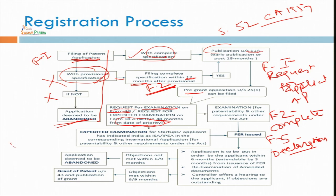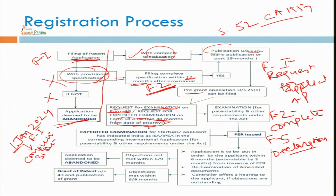For example, you have filed on 1st January 2024. You have to file the complete specification within 12 months, that is by 31st December 2024. After that, you can file a request for examination within 4 years — that is by 31st December 2028. Examination will be there for patentability and other requirements: the examiner will see section 3, section 4, and whether the essentials of patent — novelty, utility, inventive step — have been fulfilled.